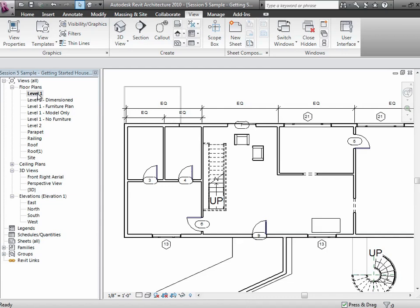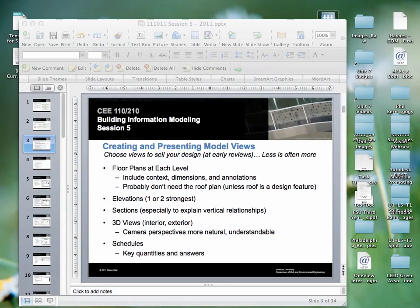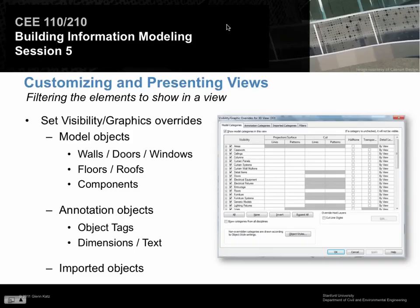As you're setting Visibility Graphics, note that the dialog has three different tabs. Model Categories affect things across all views. Annotation Categories let you turn off specific annotations in one specific view — you can turn off dimensions or tags even though you've placed them. Imported Categories let you control visibility of things like DWG files or XREF model files you've brought in underneath your drawing. All these different controls are available to you in the Visibility Graphics dialog.